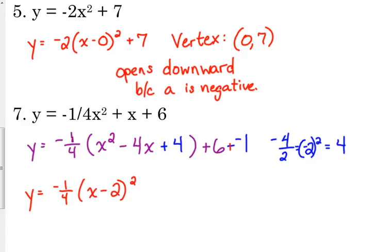So subtracting a negative is the same as adding a positive. So 6 - (-1) is the same as 6 + 1. So we've got +7 on the end, meaning our vertex would be at (2, 7).